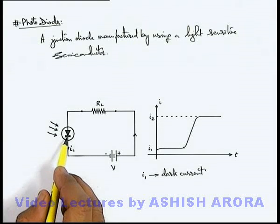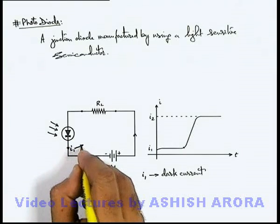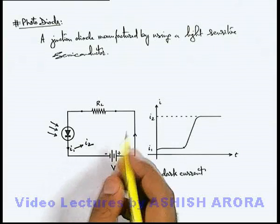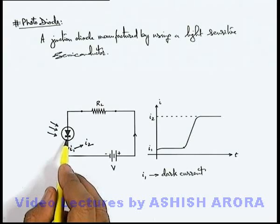suddenly electron-hole pairs are generated in the junction, and the amount of current flowing through it will increase from i₁ to i₂. Or we can say its conductivity increases and the resistance suddenly falls.